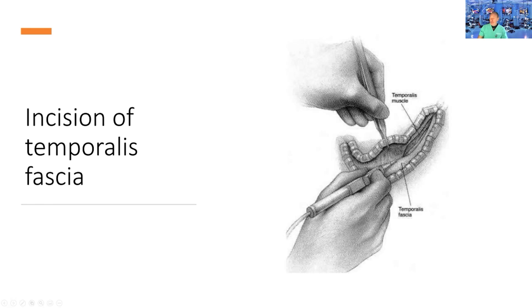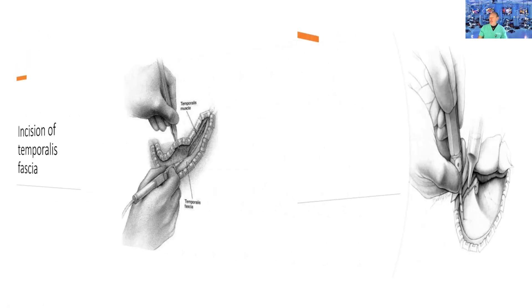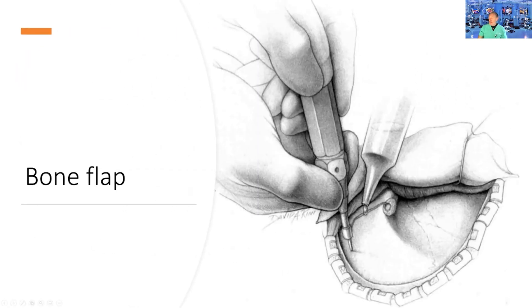I try to stay between the fascia underneath the fat pad to preserve the frontalis branch of the facial nerve. The bone flap is as basal as possible to avoid traction. If doing a mini-pterional, the incision is smaller, limited to the pterion.